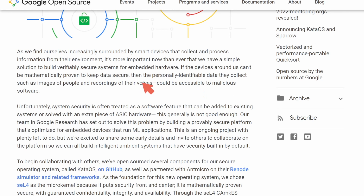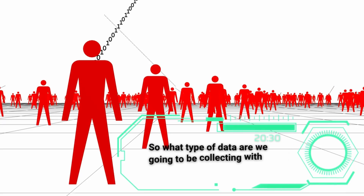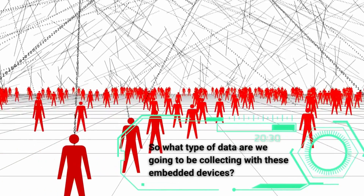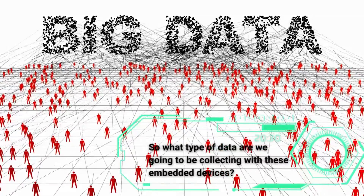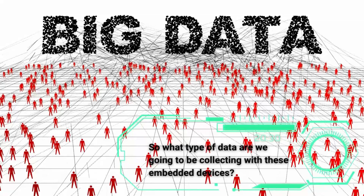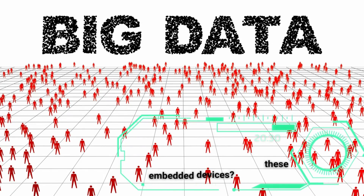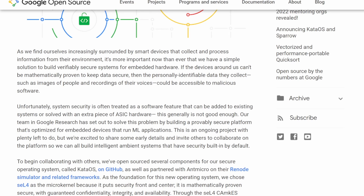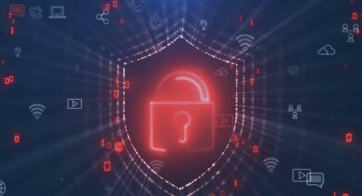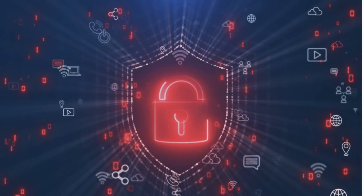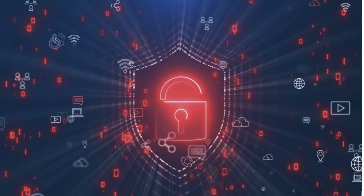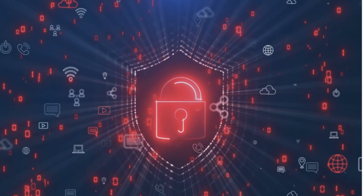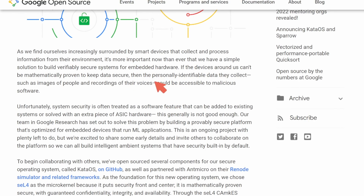What I'm more interested in is the specific example they gave: images of people and recordings of their voices could be accessible to malicious software. We all know Google is a huge company known for its search engine and data collection, which it sells as services to advertisers for targeted audiences. Wouldn't it be convenient if Google could get help from the open source community building a project that could assist their private data collection endeavors? This is all speculative, but it does seem a little self-serving to create an open source project highly focused on security for machine learning and potential data collection. Let me know what you think in the comments.